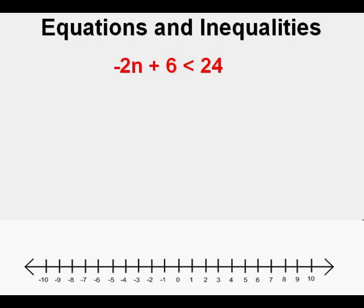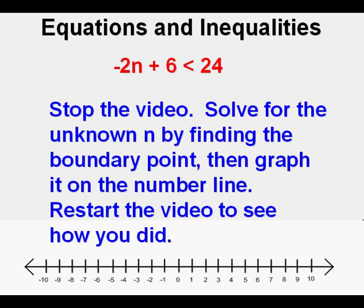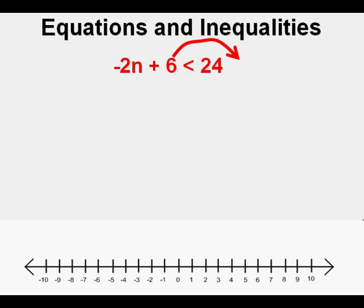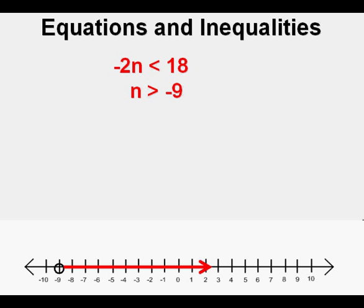Here's another inequality: negative 2n plus 6 is less than 24. Stop the video — solve for the unknown n by finding the boundary point, then graph it on a number line, and restart to see how you did. To solve, first we move the positive 6 over to the right, where it becomes minus 6. Combining like terms, 24 minus 6 makes 18. We divide both sides by negative 2 and switch the inequality symbol since we divided by a negative number, so the less than symbol switches to greater than. Therefore, n is greater than negative 9. To graph it, we use the open circle for greater than and draw the arrow to the right.